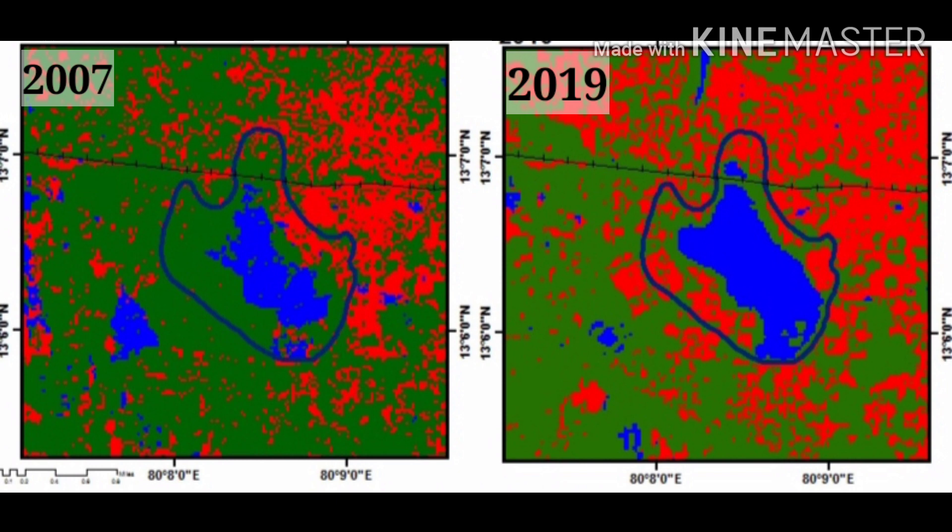In 2019, encroachment can be seen on the south-western side and the northern part of the lake. As explained earlier, development was from the eastern side, but in 2019 we can see many buildings around the lake, which means the city limits have crossed Ambatur.